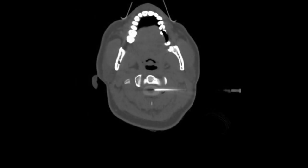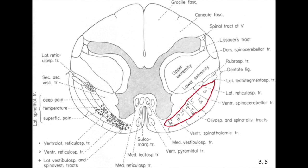Once CSF egress is confirmed, a repeat CT scan is obtained to confirm adequate needle placement in the anterolateral quadrant of the spinal cord contralateral to the painful side. Because of the somatotopic arrangement of the spinothalamic tract, the needle can be positioned more anteromedially — two to three millimeters anterior to the dentate ligament — for cervical, thoracic, and arm pain, or more posterolaterally — one millimeter anterior to the dentate ligament — for pain located in the lumbosacral or leg region.